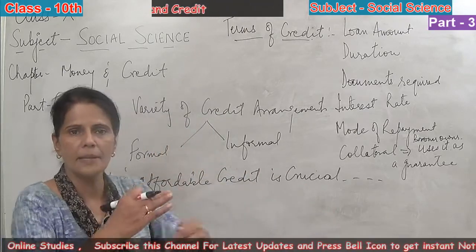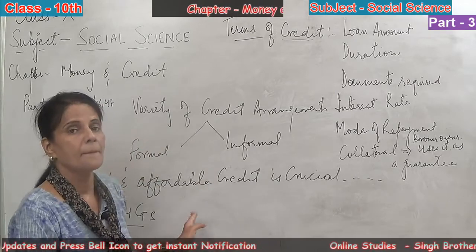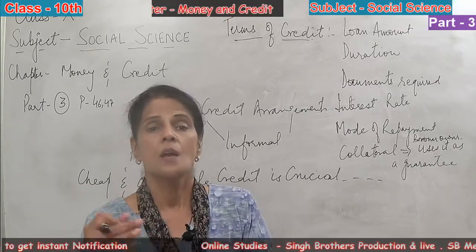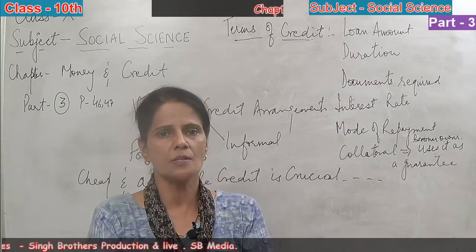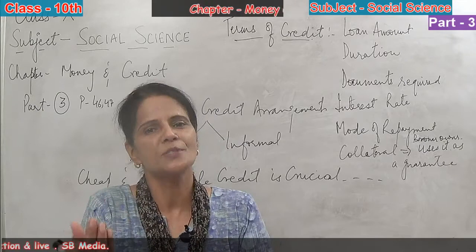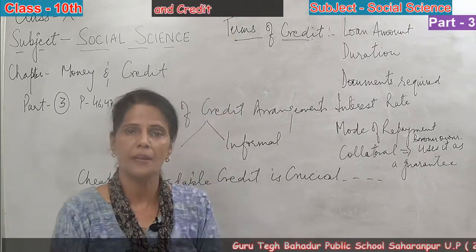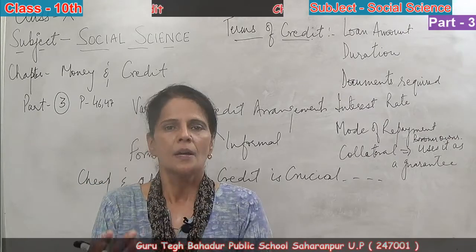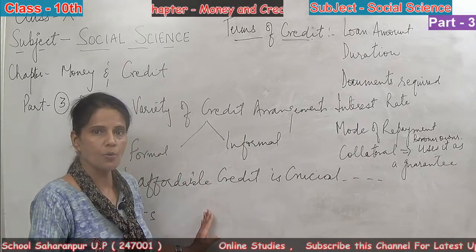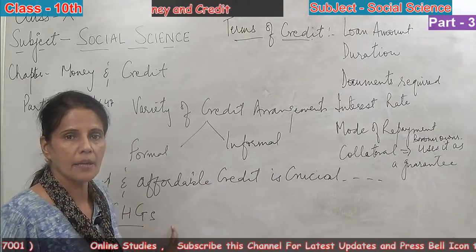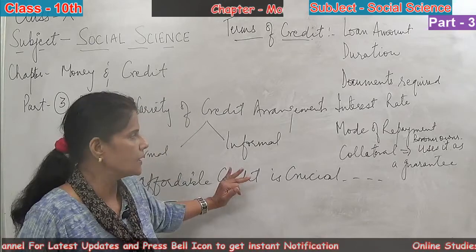Self-help groups are rightly called the building blocks of the rural poor. Not only do they help people financially, but when members sit together they also discuss their social problems — domestic violence, property matters, and other issues — and make collective decisions. So these are the building blocks of the rural poor, helping people not only financially but socially and culturally as well. They are still working in many villages. Previously started by women, today even males are involved in self-help groups, and they are working very well in rural areas.